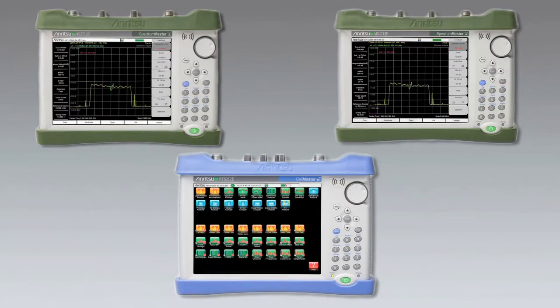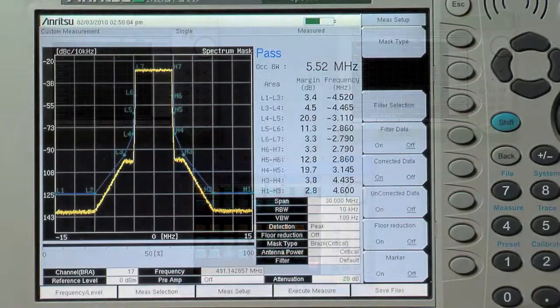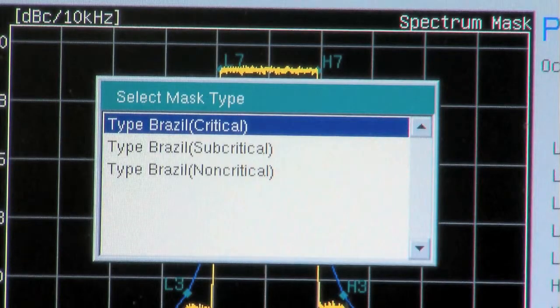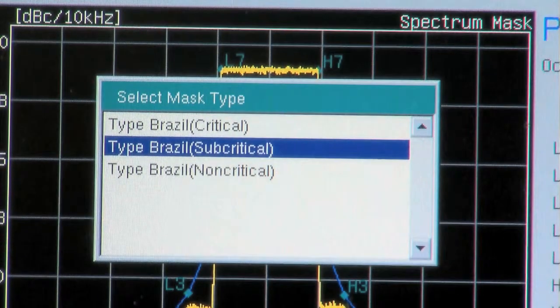configured with ISDB-T signal analysis options, all have the capability to make spectrum mask measurements according to the ISDB-T critical, subcritical, and noncritical mask specifications.